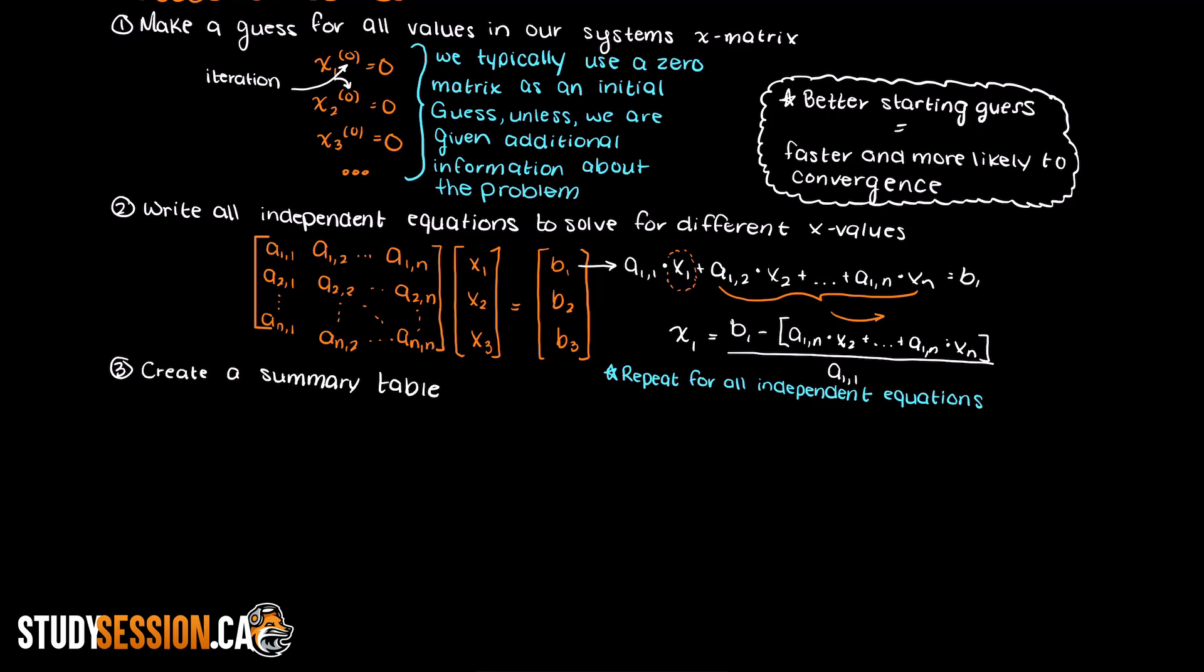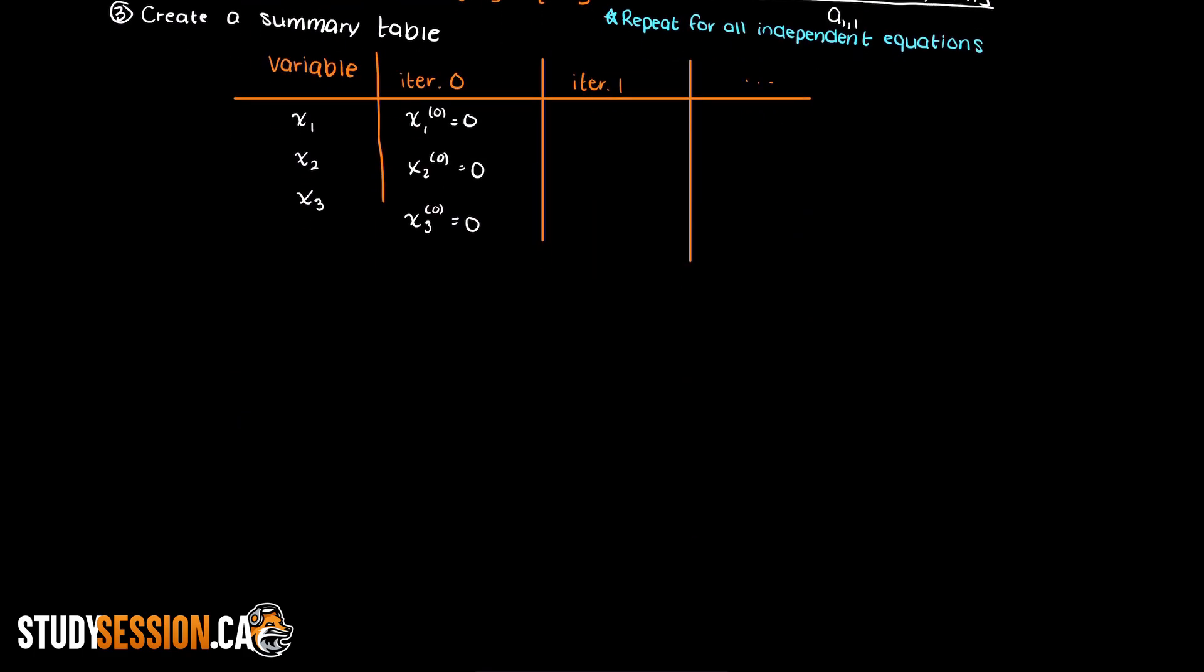Step 3: Once we have rewritten all of our system of linear equations, it is often wise at this point to create a table to summarize all of your relevant information. This is how I would recommend setting up your table. However, as long as your table has all of the important information on it and you understand it, that is all that matters.